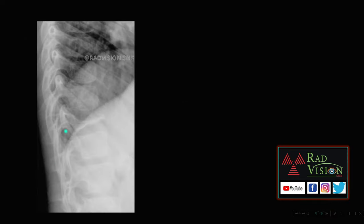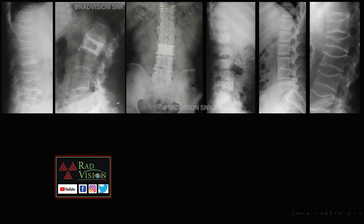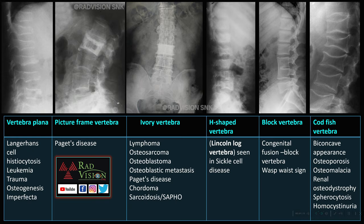Next is a child with complete destruction of a vertebra — this is a classical case of vertebra plana. Common conditions causing vertebra plana include Langerhans cell histiocytosis (most common in children), leukemia, metastasis, myeloma, lymphoma, hemangioma, osteoporosis, and trauma.